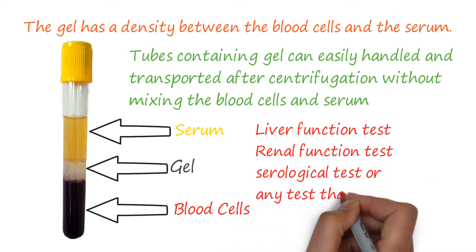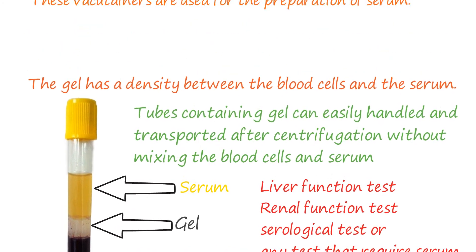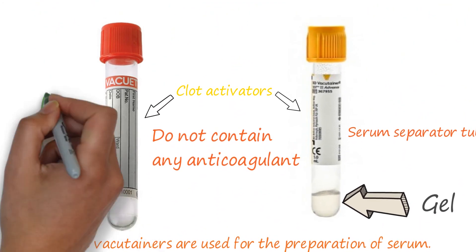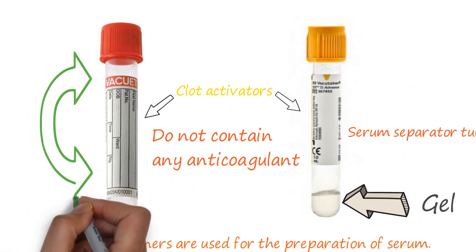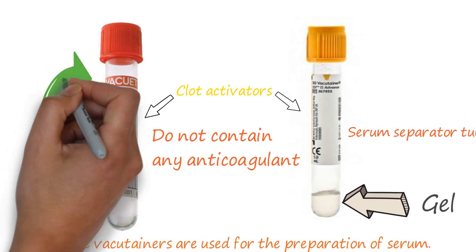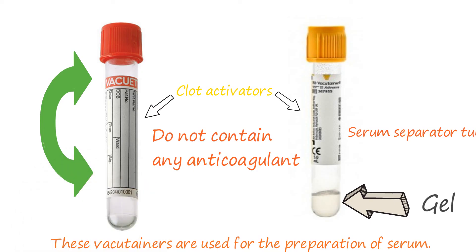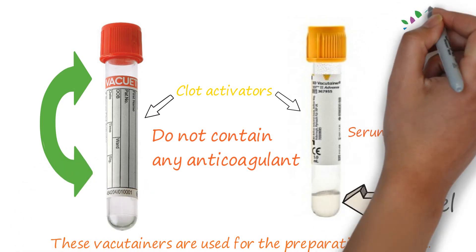Both tubes can be used for tests such as liver function tests, renal function tests, serological tests, or any test that requires serum. One important point to remember: invert the tube to activate clotting and let it stand until the blood clots before centrifugation.